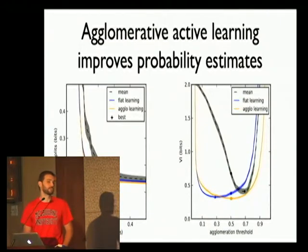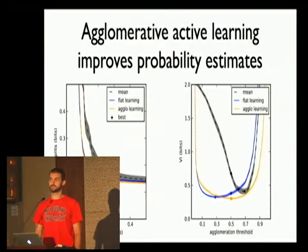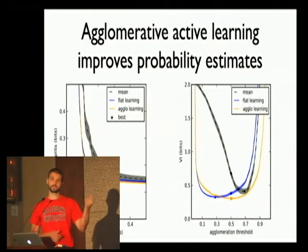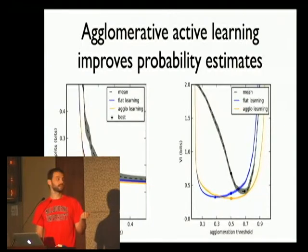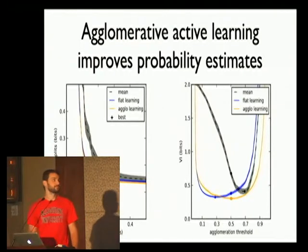This is very important in our later stages when we're doing proofreading. Our accuracies are nowhere near enough to handle gigantic volumes, so we get lots of errors and have human proofreaders go and fix them. You want to know where to prioritize that proofreading effort, and if you have a good probability estimate, you can take proofreaders to the most uncertain regions.